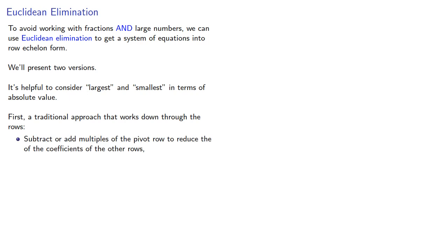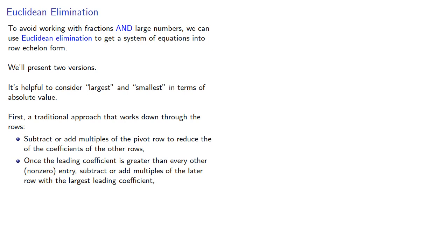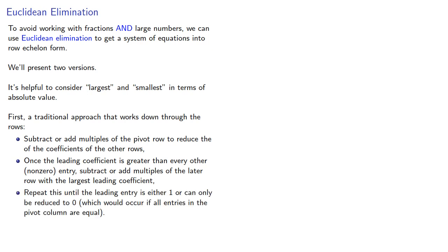Subtract or add multiples of the pivot row to reduce the coefficients of the other rows. Once the leading coefficient is greater than every other non-zero entry, subtract or add multiples of the later row with the largest leading coefficient. Repeat this until the leading entry is either 1 or can only be reduced to 0, which would occur if all entries in the pivot column are equal.